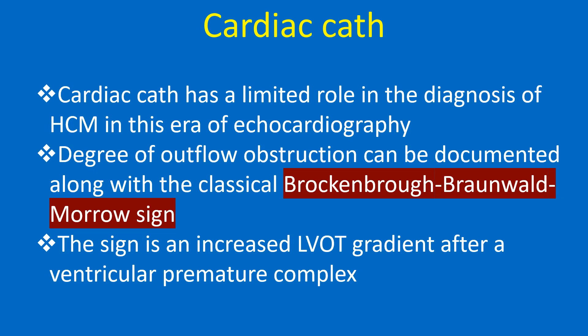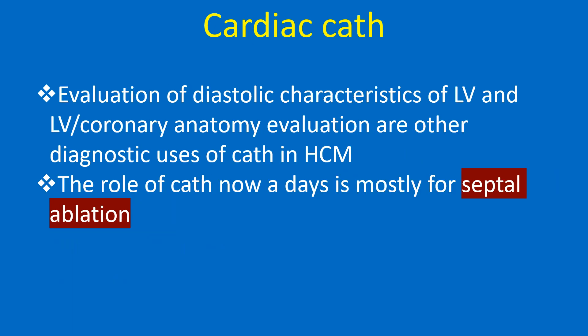Cardiac catheterization has a limited role in the diagnosis of HCM in this era of echocardiography. Degree of outflow obstruction can be documented along with the classical Brockenbrough-Braunwald-Morrow sign — an increased LVOT gradient after a ventricular premature complex. Evaluation of diastolic characteristics of LV and coronary anatomy are other diagnostic uses of cath in HCM. The role of cath nowadays is mostly for septal ablation.